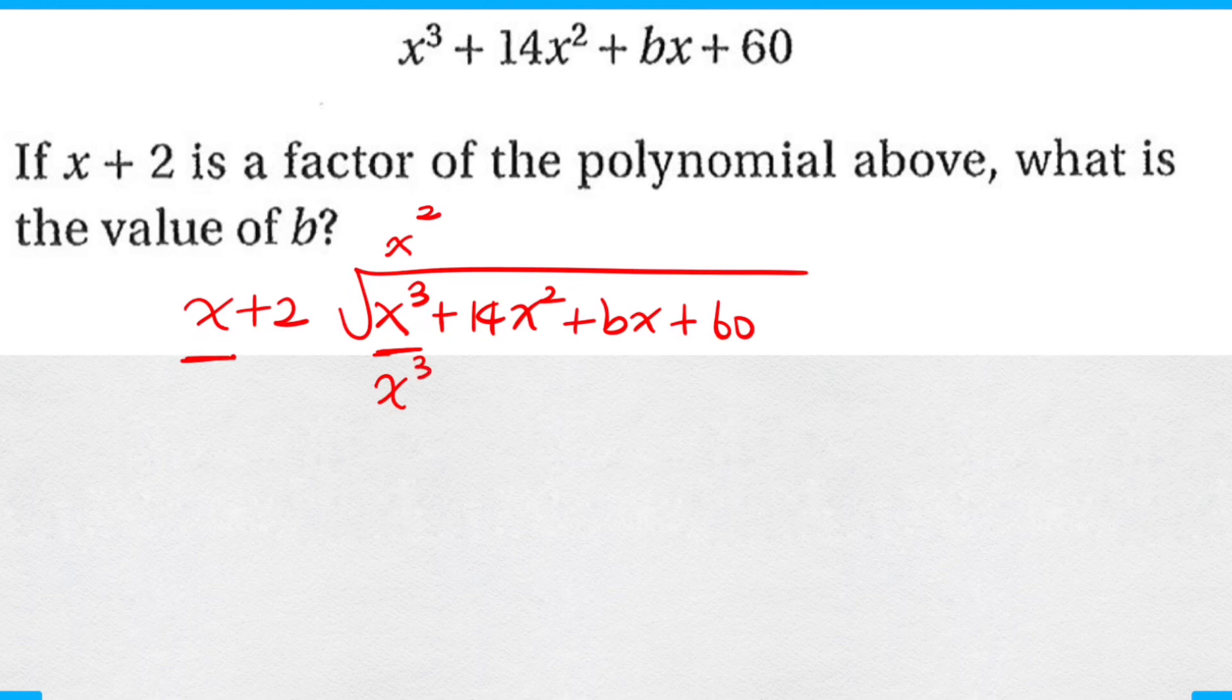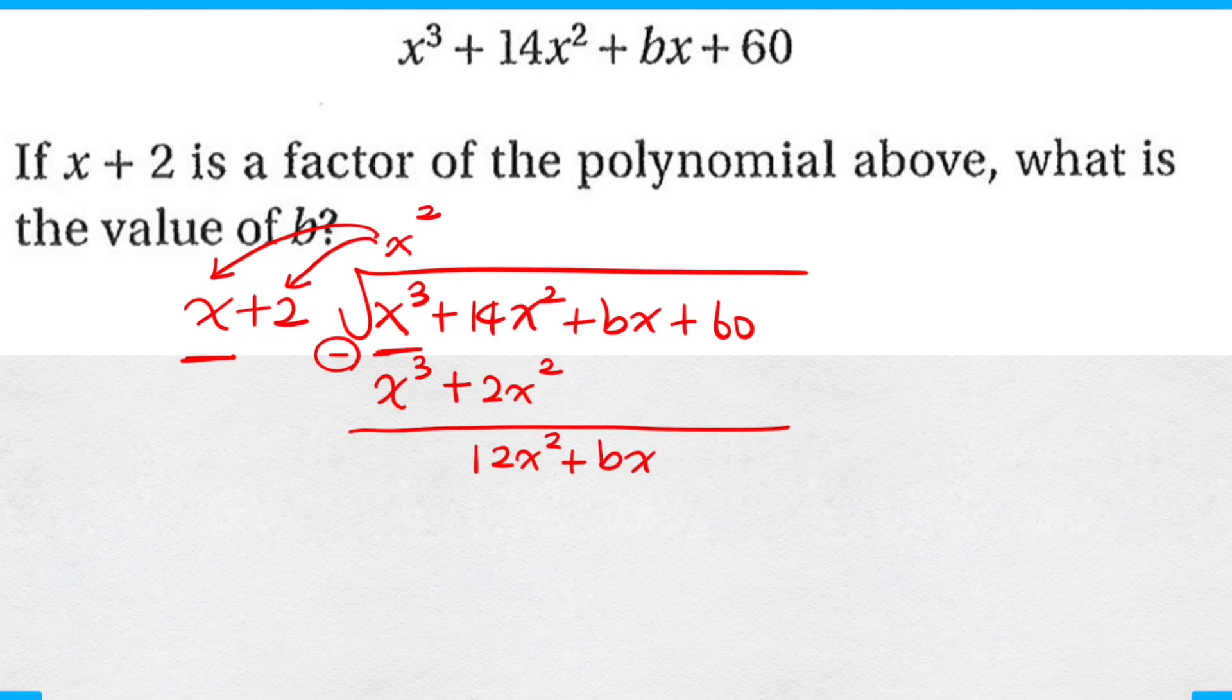When I do that, I would get x cubed, but I must remember to distribute the x squared to the 2 as well, to the positive 2, so it becomes plus 2x squared. Now simplify by subtracting, you get 12x squared plus bx plus 60.